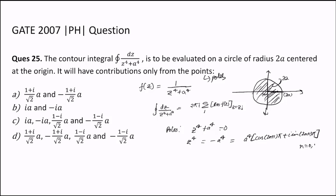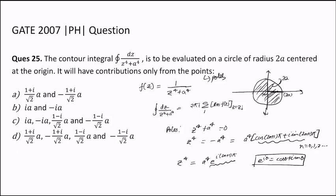Where n is 0, 1, 2, and so on. We can also write this as a to the power 4 times e^(i(2n+1)π), because we know that e^(iθ) is nothing but cos θ + i·sin θ. So replacing θ with (2n+1)π gives us the exponential form of the equation.